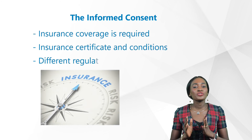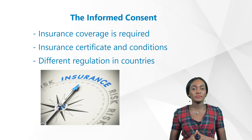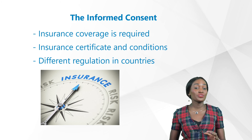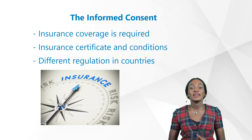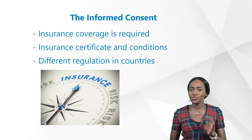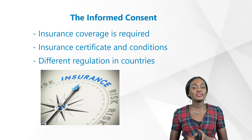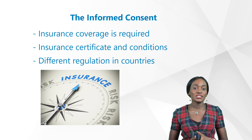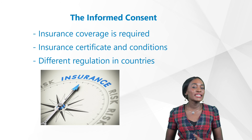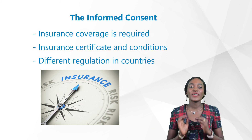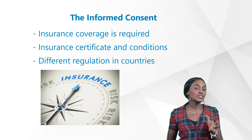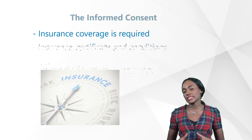According to some European countries — for example Germany and Austria — national regulations require insurance coverage for the trial subjects. The subject must receive all necessary information concerning insurance in the informed consent: the contact details of the insurance, the insurance certificates, and the insurance conditions. In other countries like the US and the UK, the investigators need a liability insurance coverage which would pay the damages if something goes wrong within a clinical study.